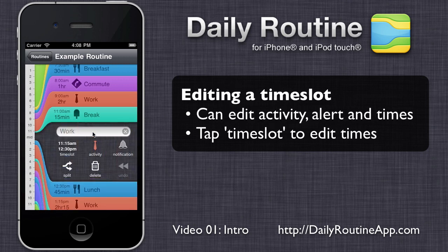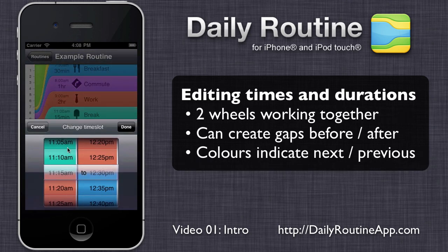To change the start time, end time, or duration of a time slot, tap the time slot button. These two wheels represent the time slot's start and end times respectively. Together, they control the time slot's duration.